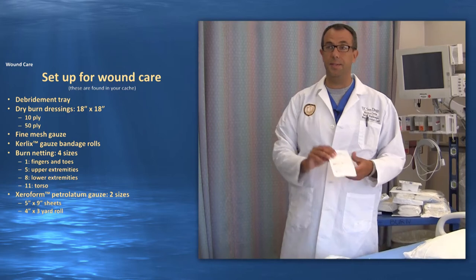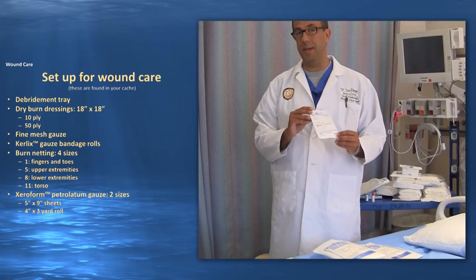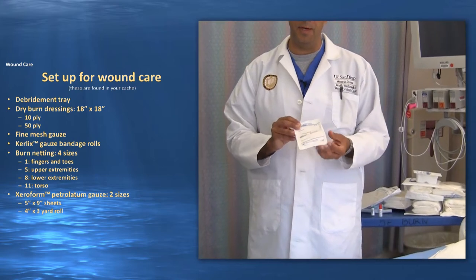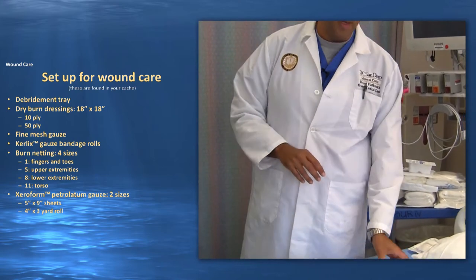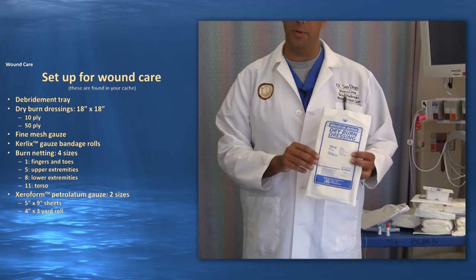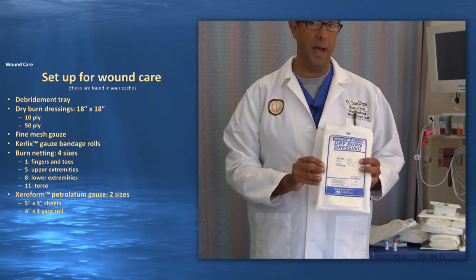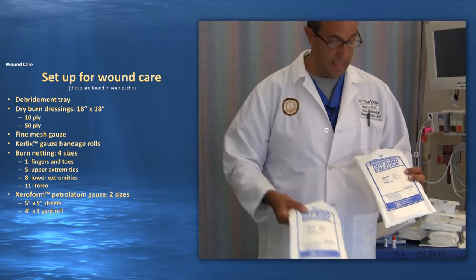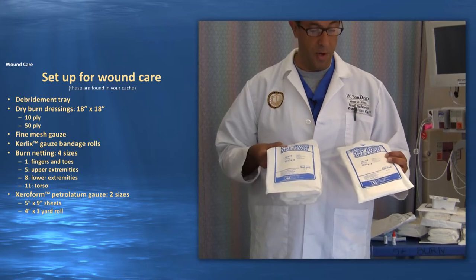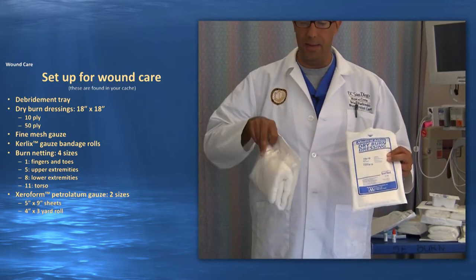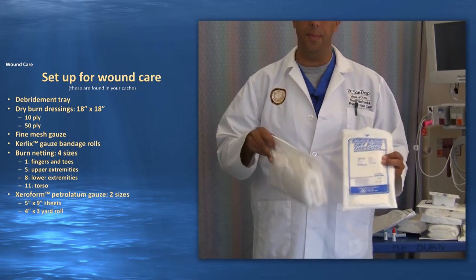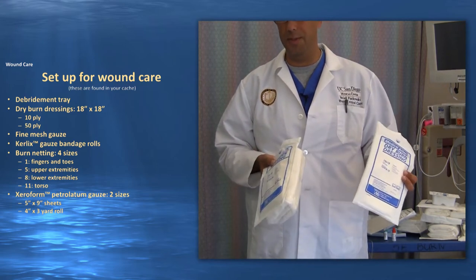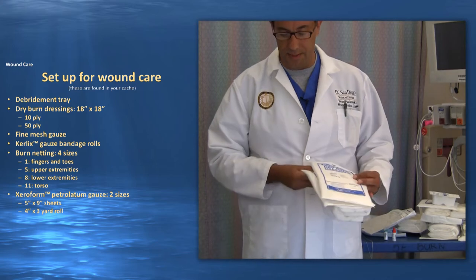The first item is the debridement tray, which will have things like pickups, sharp scissors like tenotomies, and other items to help you debride and clean up wounds. Next are your dry burn dressings, which come in two different size packages: 18 by 18 dry burn dressings — one being a 10-ply package and the other a 50-ply package. The 50-ply package is going to be used for larger, more exudative wounds that you know are going to get pretty messy.